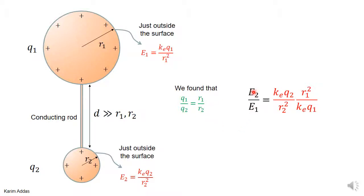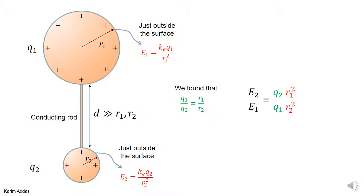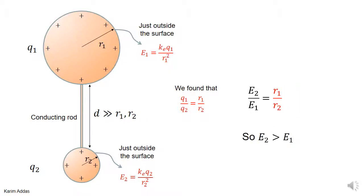If we take E2 divided by E1, we get (kQ2/R2²) divided by (kQ1/R1²). The k's cancel, giving us (Q2/Q1) times (R1²/R2²). Now Q2/Q1 equals R2/R1, so substituting that in, one R2 cancels and one R1 cancels, and we get the final result.